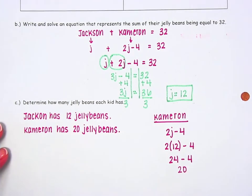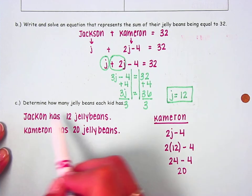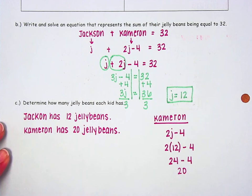We can go back and check because we know together Jackson and Cameron should have 32 jelly beans. If Jackson has 12 and Cameron has 20, together they have 32.